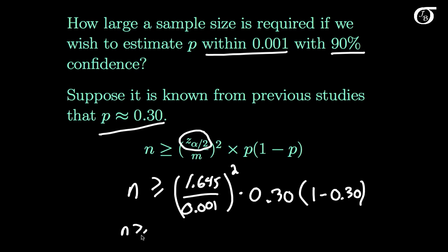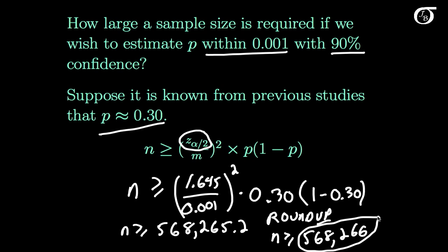And I get that N has to be bigger than or equal to 568,265.2. And I would again round up and say that N has to be bigger than or equal to 568,266. That is the minimum sample size required. Pretty huge sample size and in a lot of cases not very practical at all.